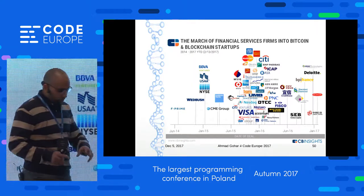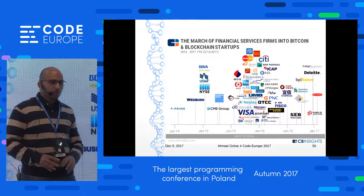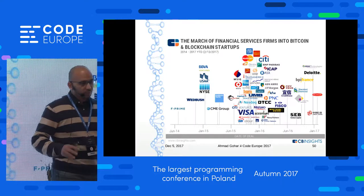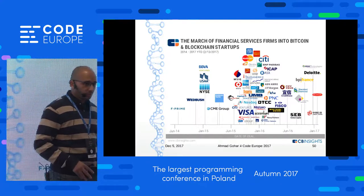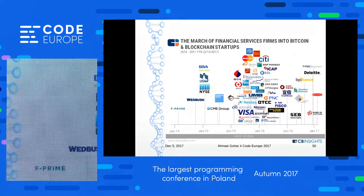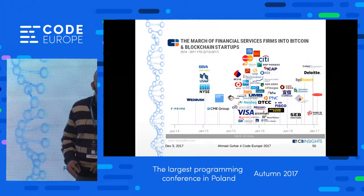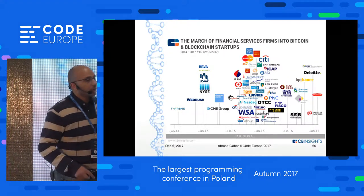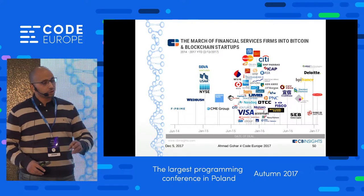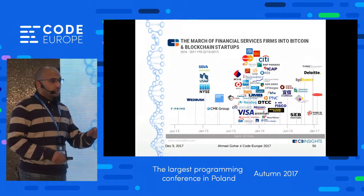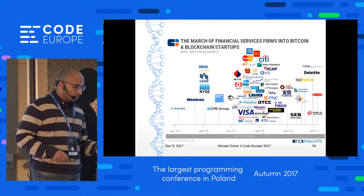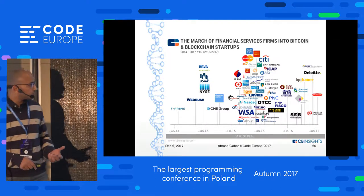Blockchain is typically described as a way to transfer money from sender to receiver without an intermediary. Western Union, which is based on transferring money, is studying blockchain to improve its service and thinking about how to change its business model — if companies like Western Union didn't adopt blockchain, they could die.